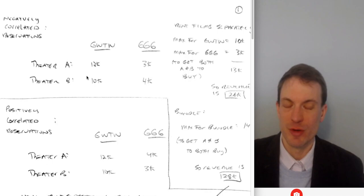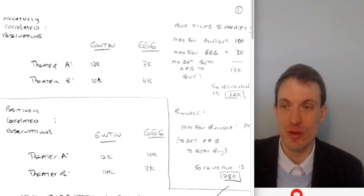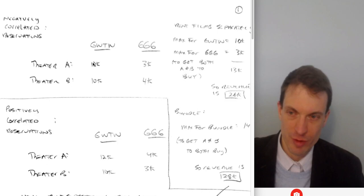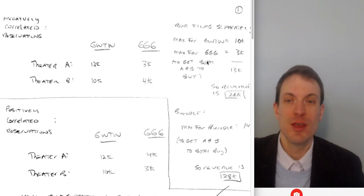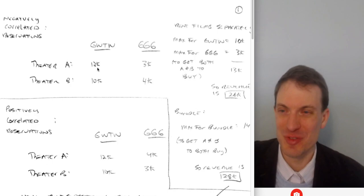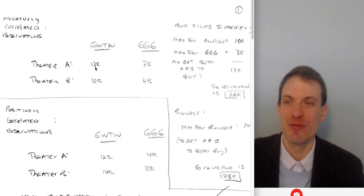Now let's go back to what we actually want to do. Let's set the price of 10K for Gone with the Wind — who buys? Both of them will buy, so we'll earn 20K in revenue from Gone with the Wind. For Getting Gertie's Garter, we'll set that at 3K — both buy, so we get 6K. So the max price we want to set for Gone with the Wind is the lower of the two reservation prices, and the max for Getting Gertie's Garter is the lower of the two — to get both A and B to buy. We'd set 10K and 3K, getting 13K per theater for total revenue of 26K.